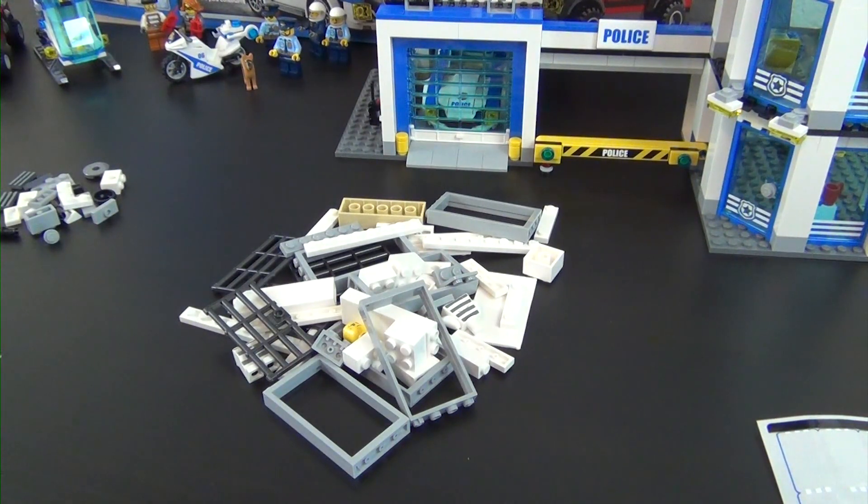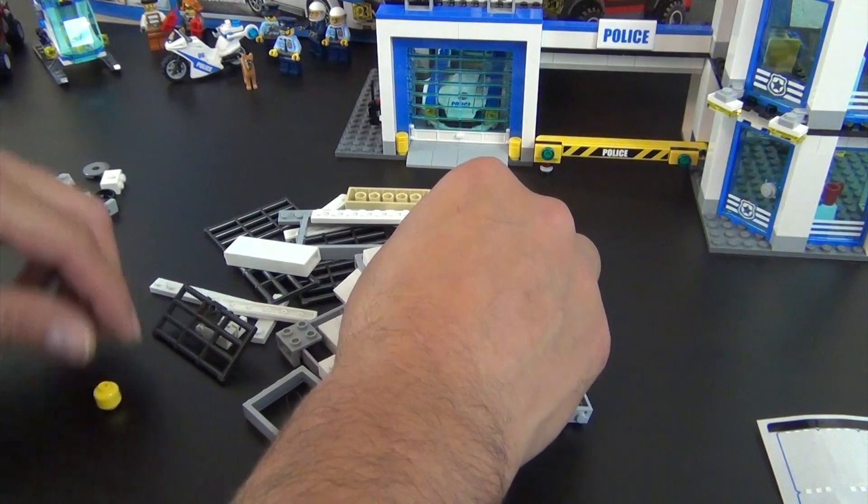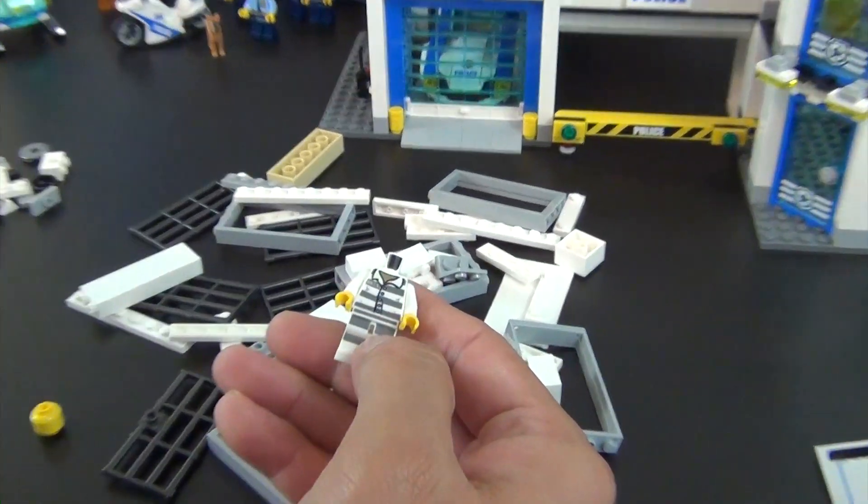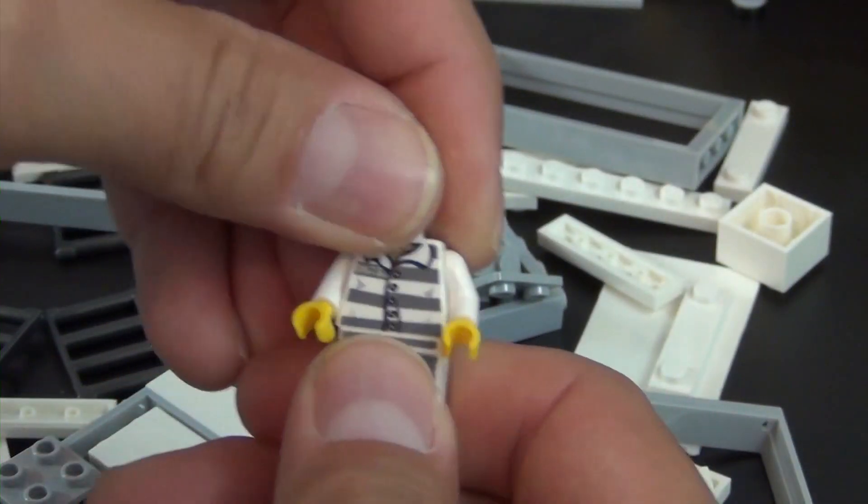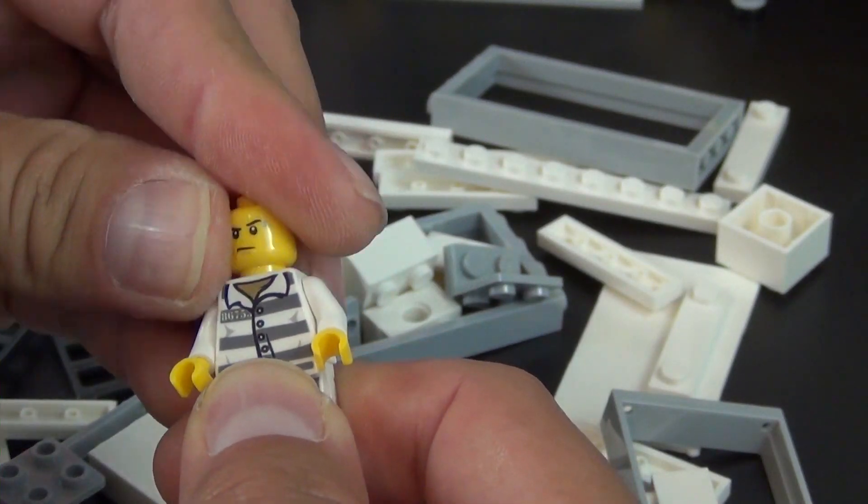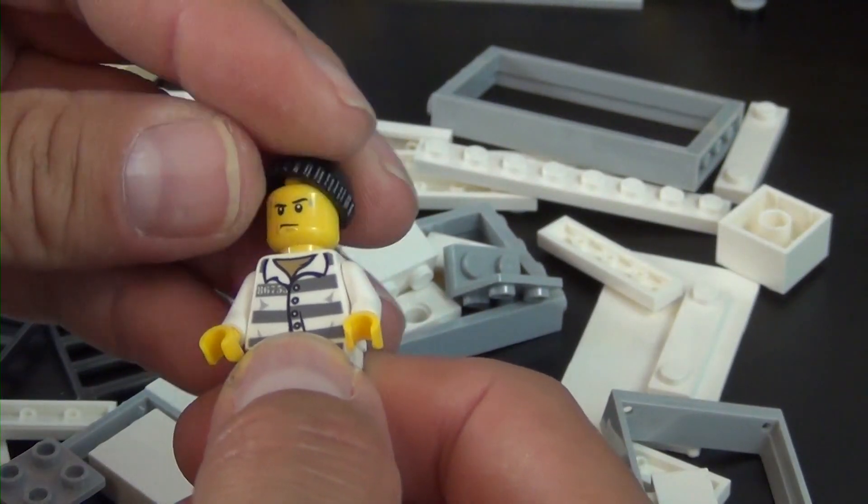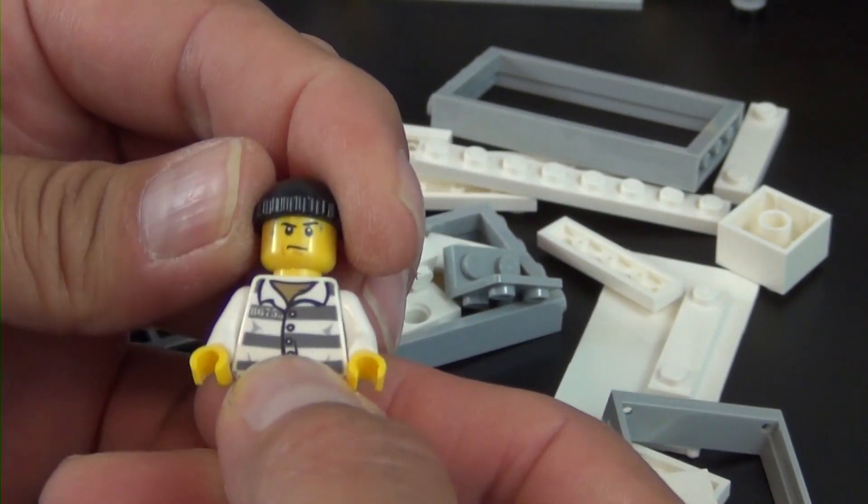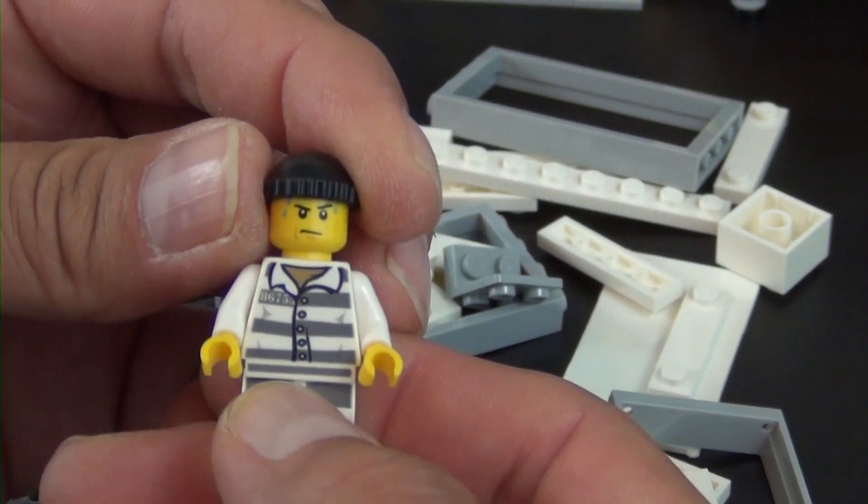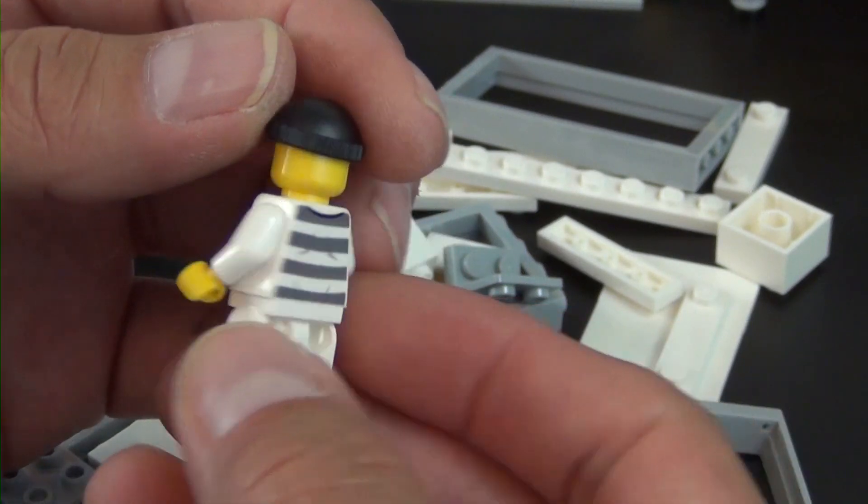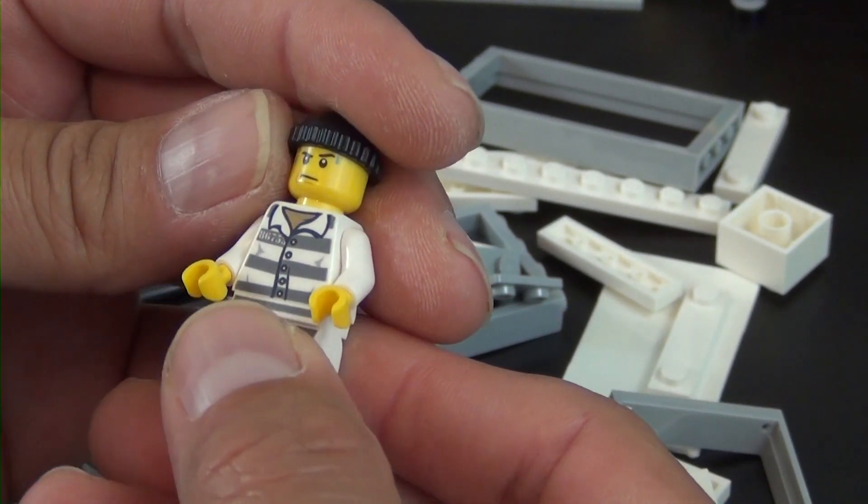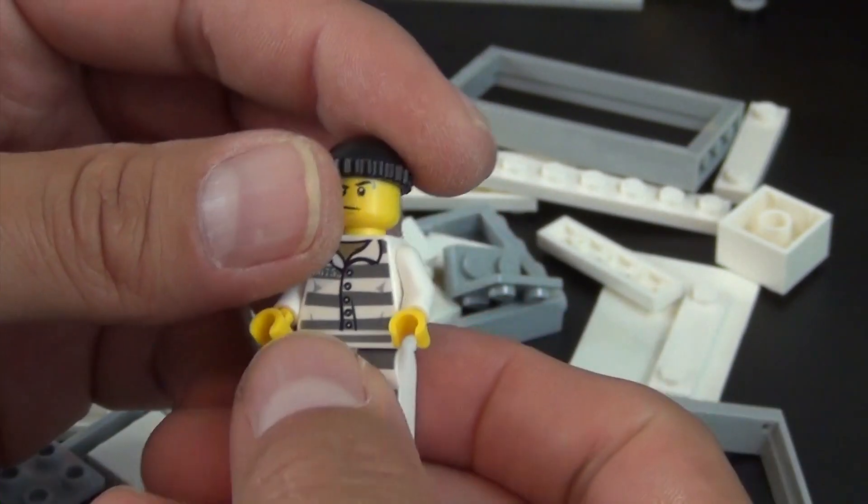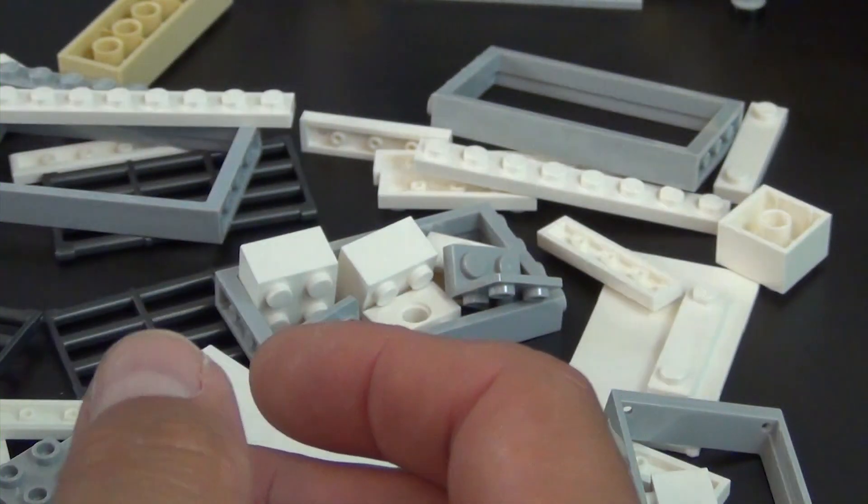All right, so there's all of our parts for bag eight. Not a lot of parts, but here is the final minifigure, just as I was saying. It's our bad guy that's in jail. He's sweating for some reason, I guess he may be working out or something in jail, so he's got sweat running down his face, and then he's just wearing his LEGO City issued prisoner outfit.